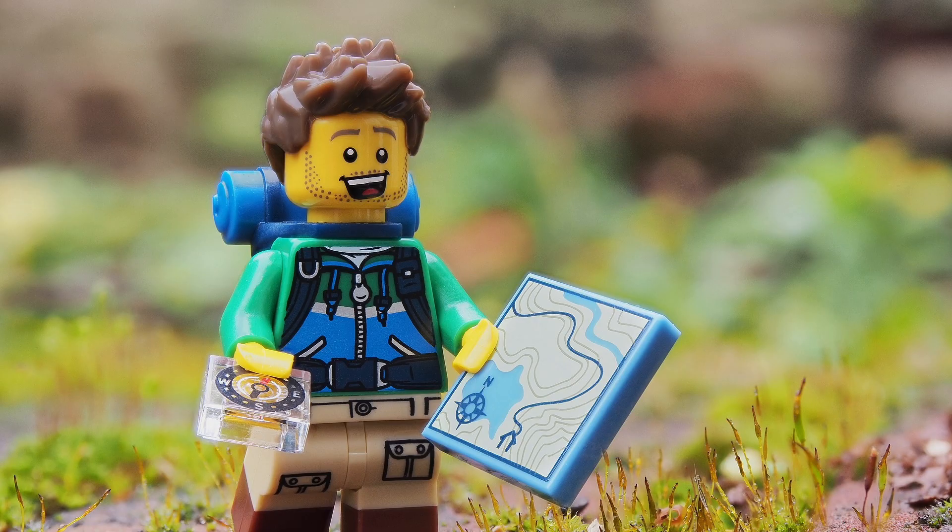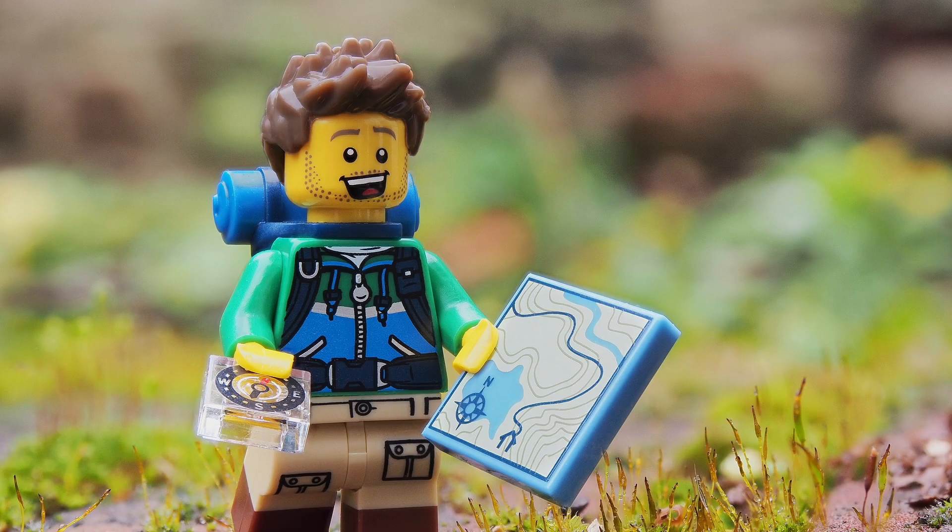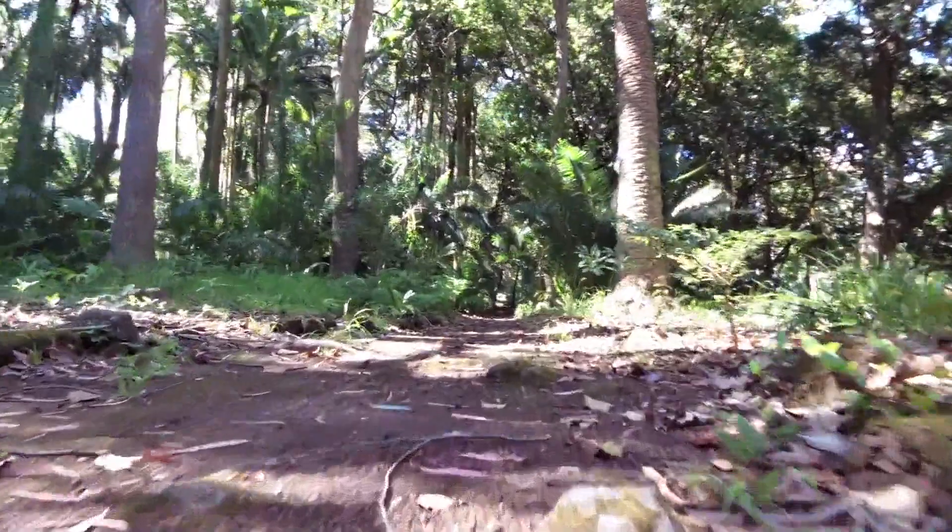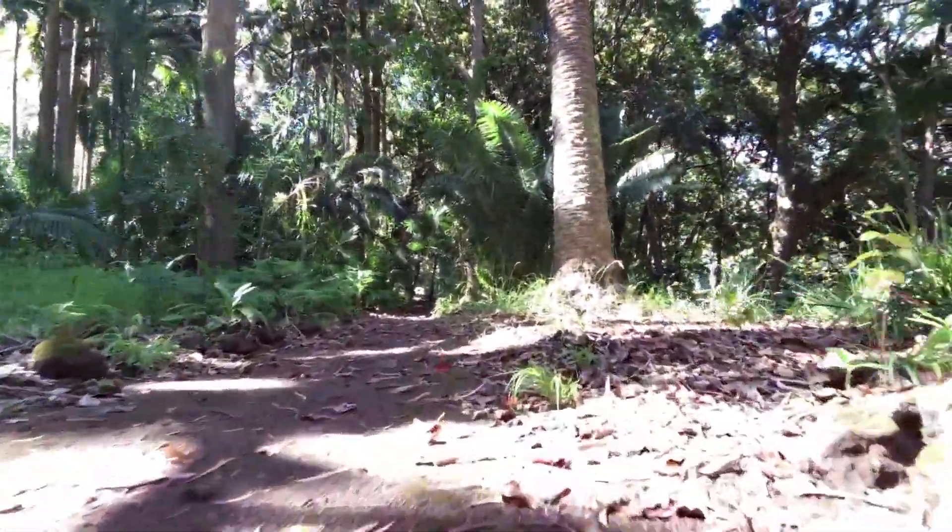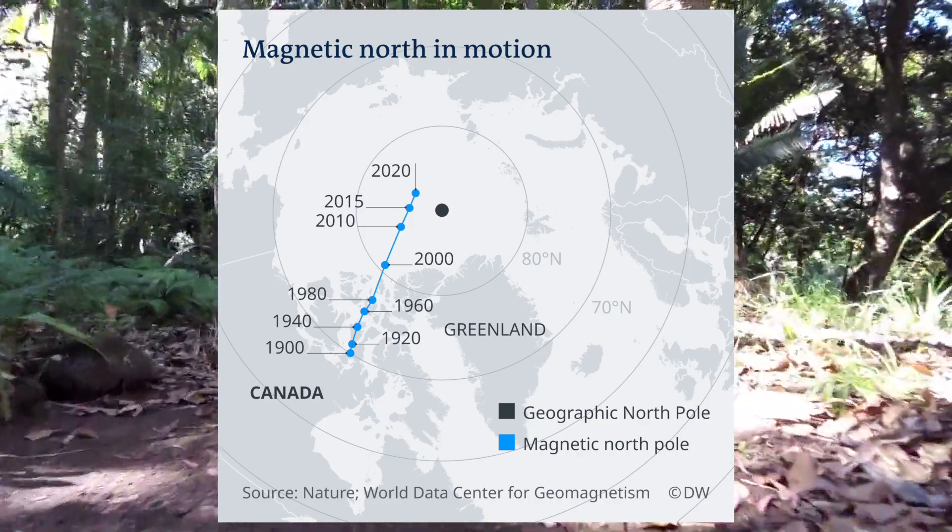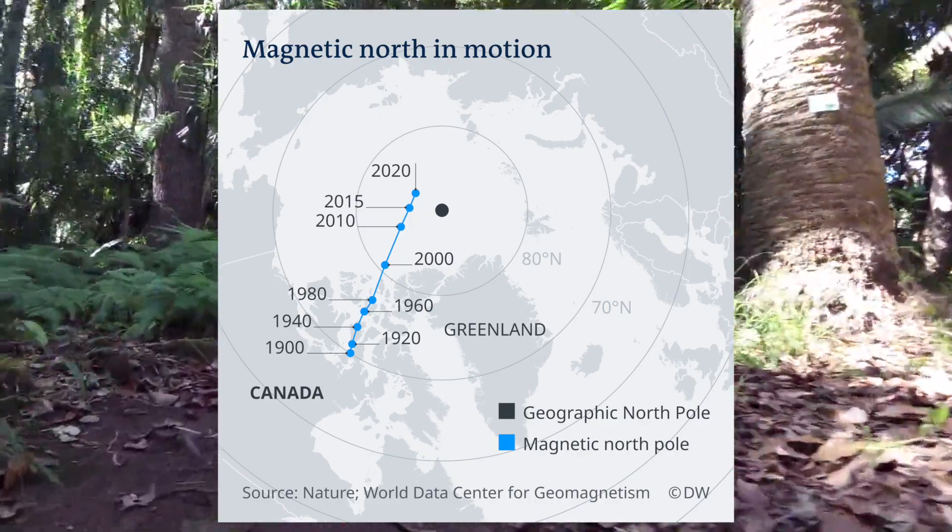It's really important to know about declination if you plan to go hiking or orienteering overseas. It varies not only across the Earth's surface, but also with time, because the magnetic North Pole drifts slightly from year to year.